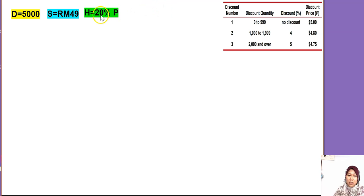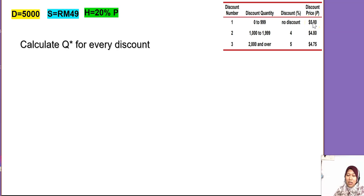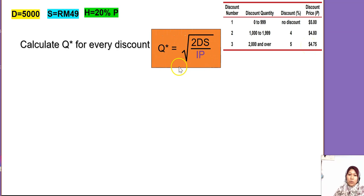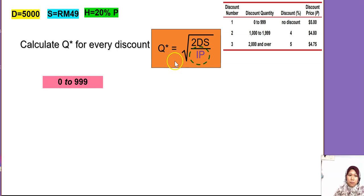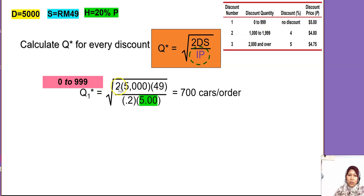Since we have a different price and the holding cost is 20% of price, we need to calculate Q for every price level — they're going to be three Q values. We use the EOQ formula because H is not fixed but a percentage. For the first range, zero to 999, the calculation is: Q = √(2 × 5000 × 49 / (0.2 × 5)). The price here is 5 ringgit, giving Q ≈ 700.